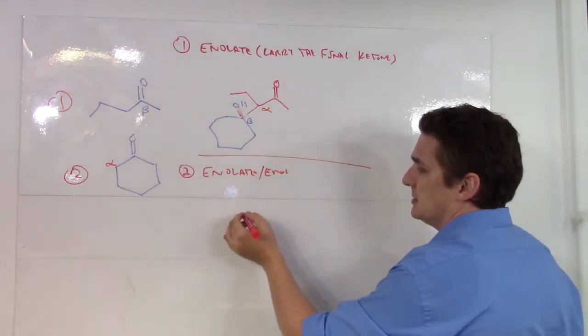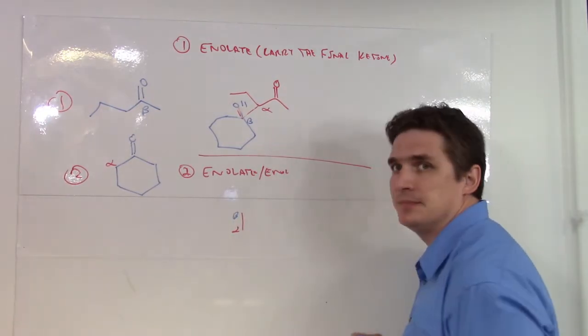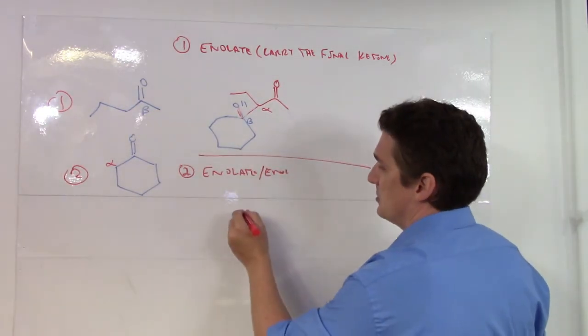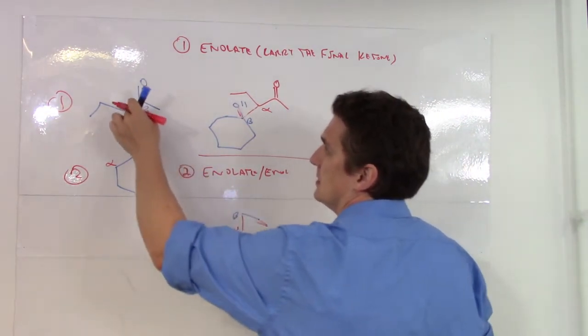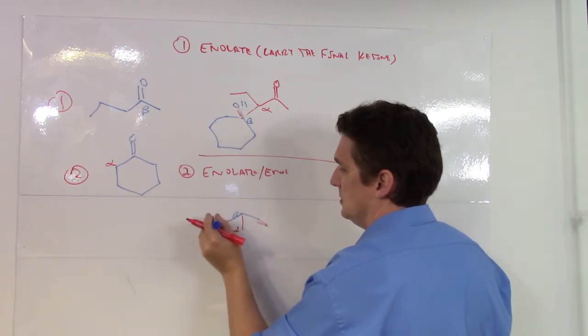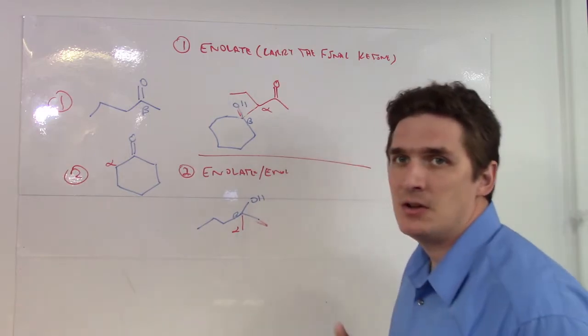So let's draw our bond between the alpha and the beta. The beta here has a methyl group hanging off, this propyl group, and if we're doing the aldol addition, this ketone here is going to need to become an alcohol.